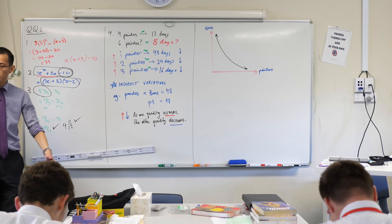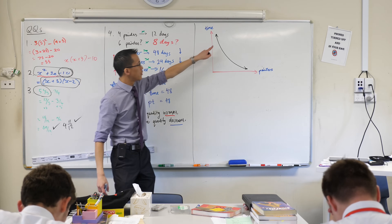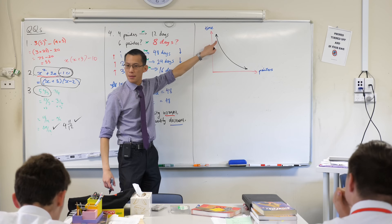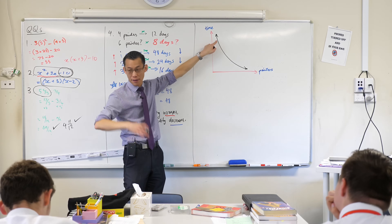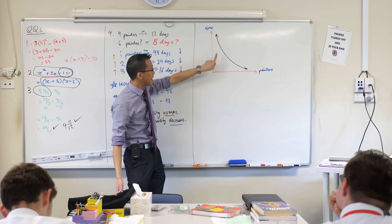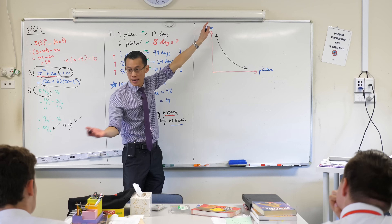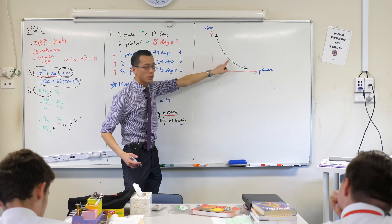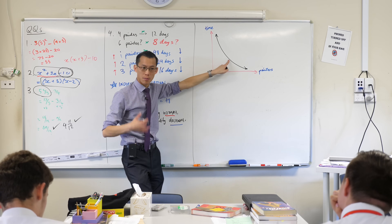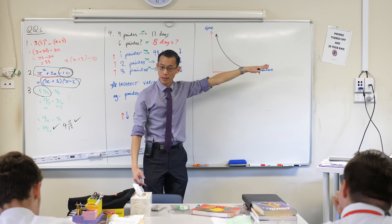You could pick points on there — this point here might be like having a single painter, which is why the time is so high: one painter, 48 days. And then as it curves down, the more painters you add, the lower the time goes.